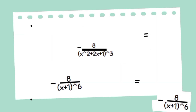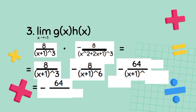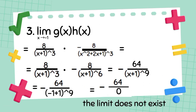Next, we substitute x equals negative 1, which is our limit. The result becomes negative 64 over negative 1 plus 1 raised to 9. After solving, the answer is negative 64 over 0, which is undefined.